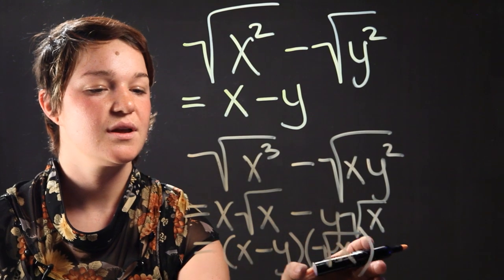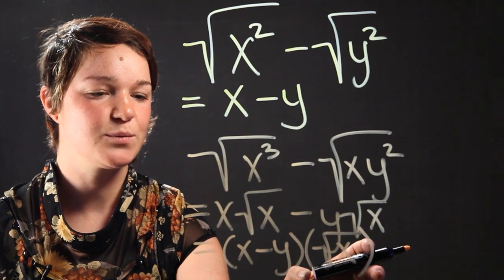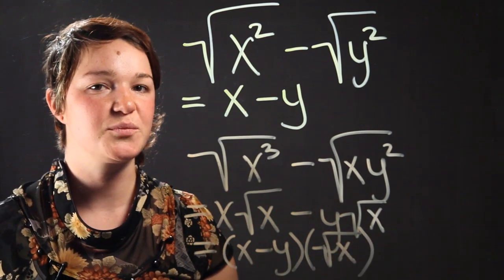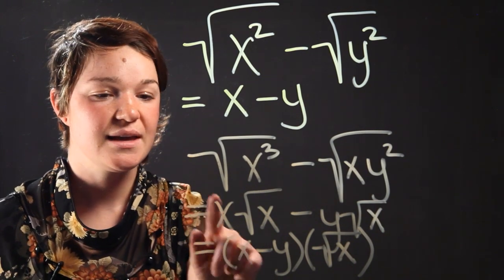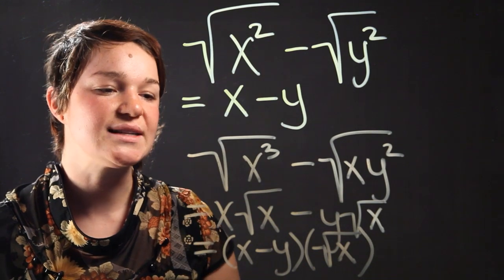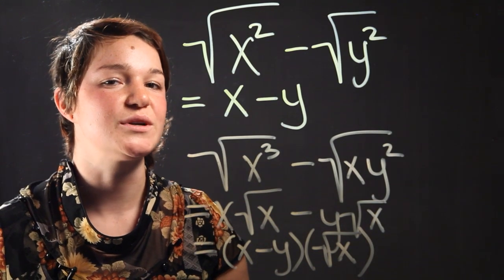So what we get is x minus y, contained within parentheses, multiplied by the radical of x. Either one of these is really the correct answer. It depends how you want to write it down.